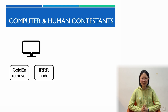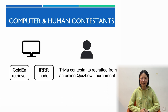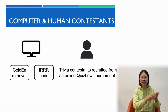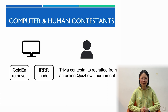Quiz bowl is a trivia game where contestants try to answer questions, but the questions can be interrupted. Because of this quirk, the clues in these questions are written to go from hard to easy, so that the contestants will know more — or in our case, can dredge up the information faster — and get the answer first.